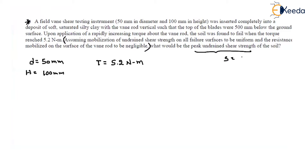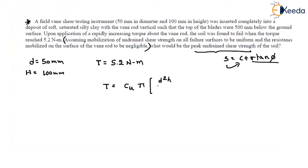If you remember the shear strength is c plus σ tan φ. As we are talking about clay-type soil, φ equals zero, which means undrained shear strength is nothing but undrained cohesion Cu. The relationship between undrained cohesion and torque T is: T = Cu × π × [D²H/2 + D³/6]. Here, if only one surface is in contact we use 12 in the denominator; if both top and bottom are in contact we use 6.